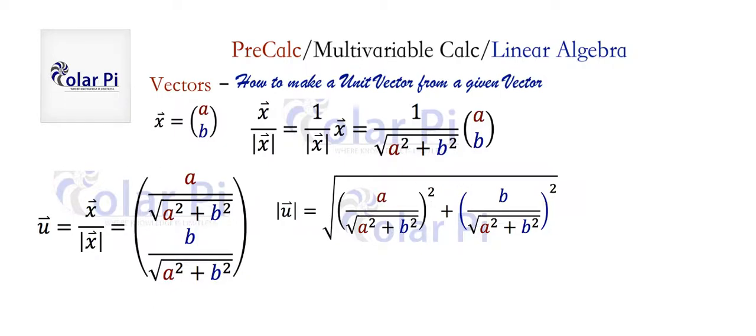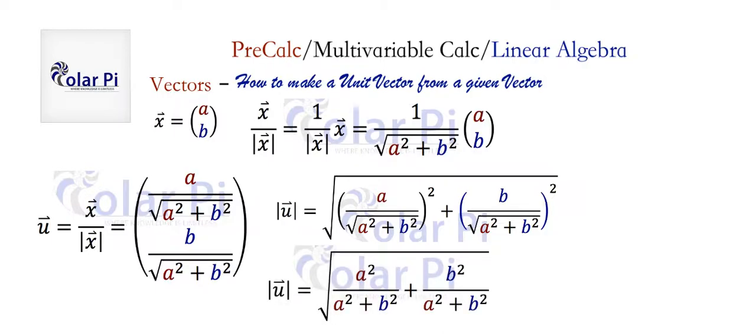And simplify a little bit more. So do a little bit of algebra. And you get here, and simplify some more. And you get here clearly. In general, it's true that if you divide the vector X by its length, that you've made it a unit vector, as we just demonstrated.